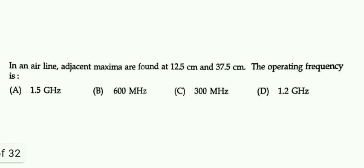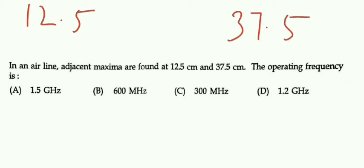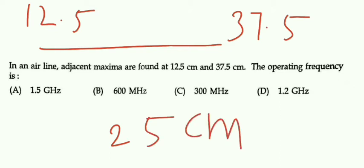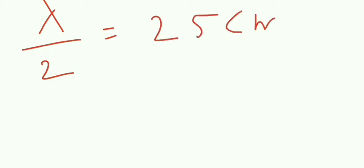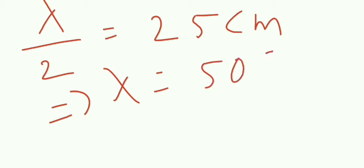In an airline, adjacent maxima are found at 12.5 centimetre and 37.5 centimetre. Find the operating frequency. The adjacent maxima are at 12.5 and 37.5, so the distance between these two is 25 centimetre. We know the formula: the distance between adjacent maxima is lambda by 2. So the distance between two adjacent maxima is 25 centimetre, which implies lambda is equal to 50 centimetre.